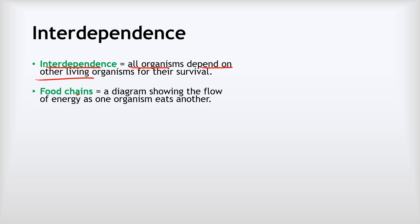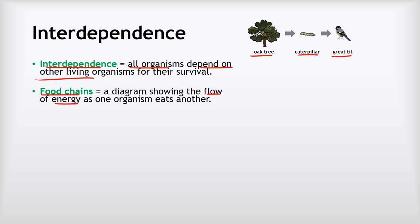One way of showing interdependence is with a food chain. A food chain is a diagram showing the flow of energy as one organism eats another. For example, the leaves of an oak tree are eaten by caterpillars, so energy flows from the oak tree to the caterpillar. The caterpillar might be eaten by a great tit, so energy flows into the great tit, and then the great tit might be eaten by a sparrowhawk — so the food chain shows how energy from an oak tree can end up in a sparrowhawk.